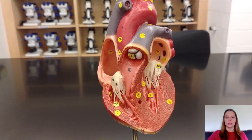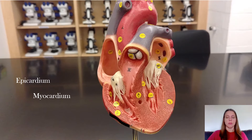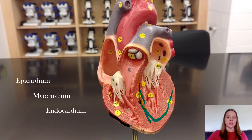The heart has three layers. There's the epicardium, which is the layer all the way on the outside. There's the myocardium, which is the very thick layer in the middle — that is the muscular layer of the wall. And then there's the endocardium, which is the layer all the way on the inside lining the walls of the heart.